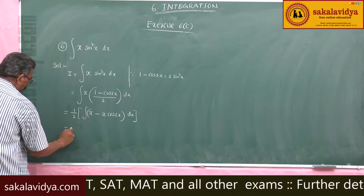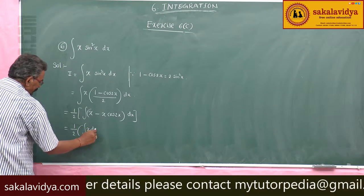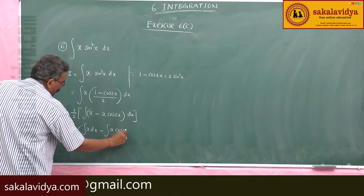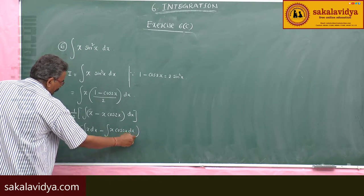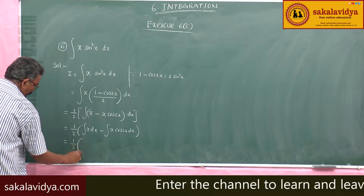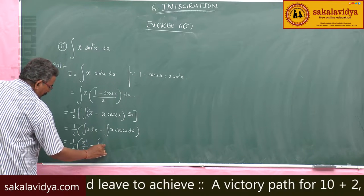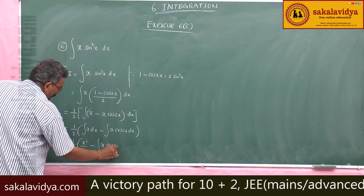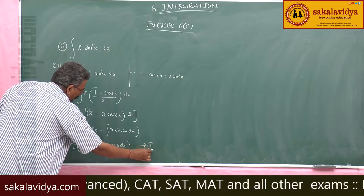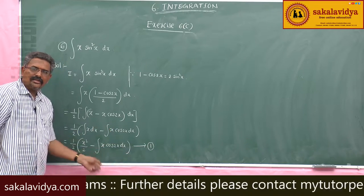This becomes one-half times the integral of x dx minus the integral of x cos(2x) dx. The integral of x dx gives x²/2, so this is half times x²/2 minus the integral of x cos(2x) dx. We call this equation 1, since we need to apply integration by parts again.